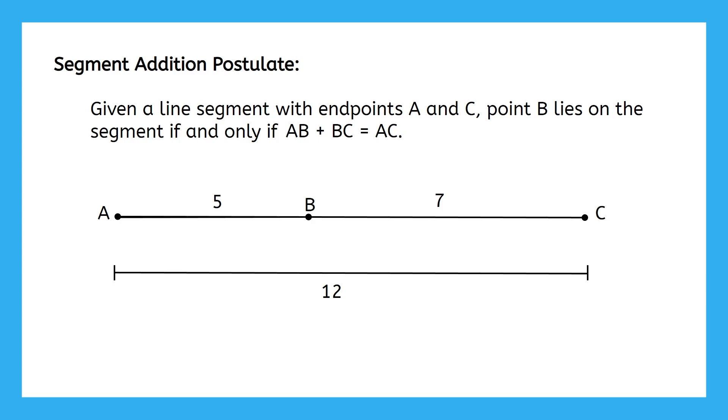It says, given a line segment with endpoints A and C, point B lies on the segment if and only if AB plus BC equals AC.